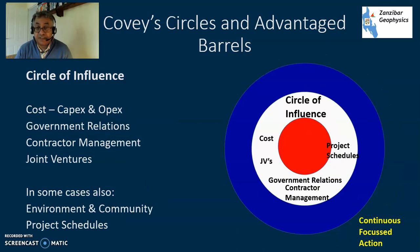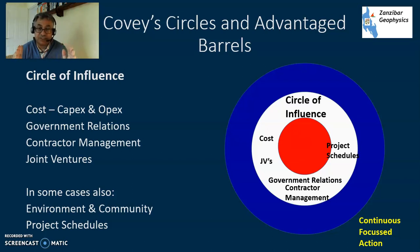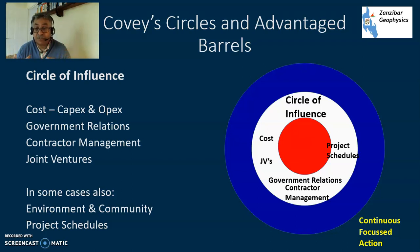Next is the circle of influence - this is the stuff where you've got influence but not control. You've got another party that you're having a relationship with. You've got your costs - your capex, your opex - you can have your contracting strategy and make the right design choices.